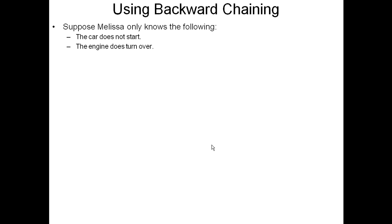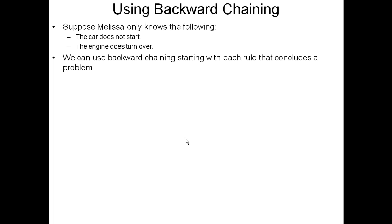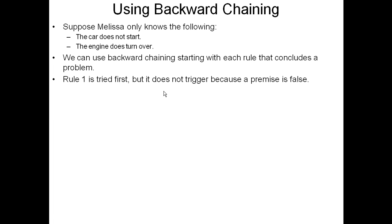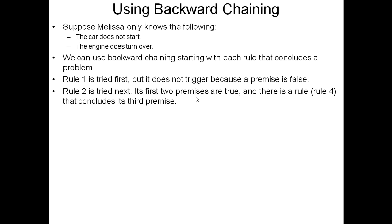Let's use backward chaining with that same rule base. Suppose Melissa only knows two facts: the car does not start and the engine does turn over. She's not proficient enough with cars to check the gas situation. We can use backward chaining starting with each rule that concludes the problem. Rule one is tried first, but it does not trigger because a premise is false — the car does not start is true, but the engine does turn over, whereas rule one says the engine does not turn over.